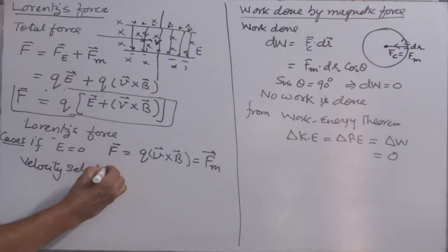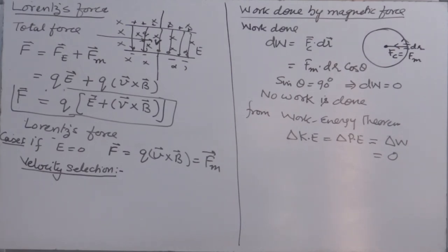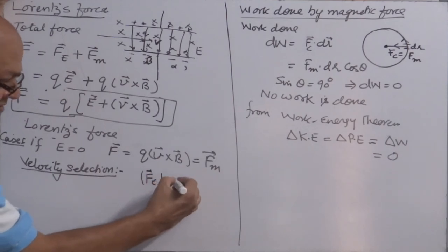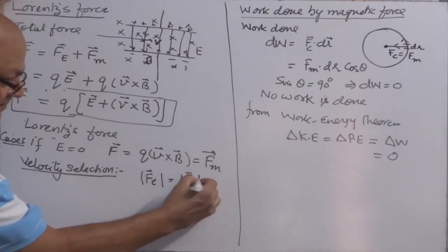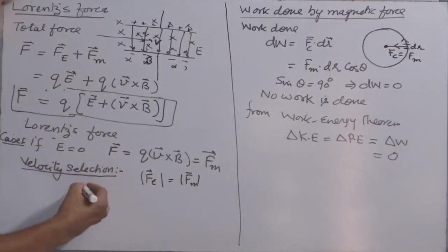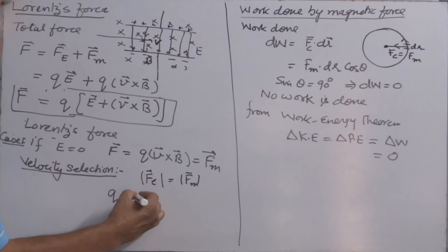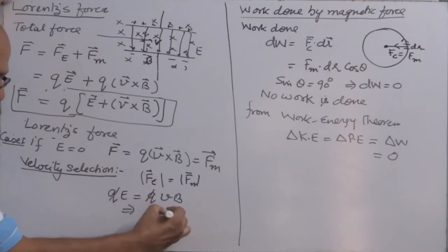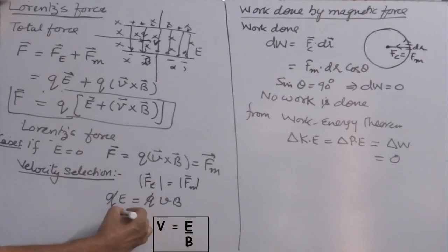So QE should equal QvB, which means the velocity selector condition is V = E/B. This allows selection of charged particles with a specific velocity.